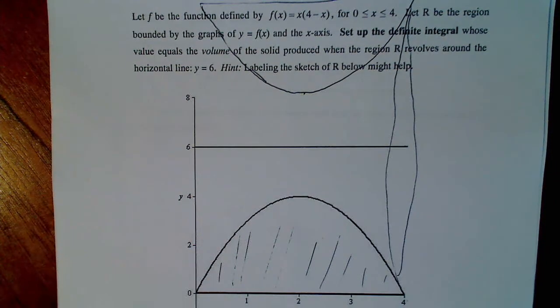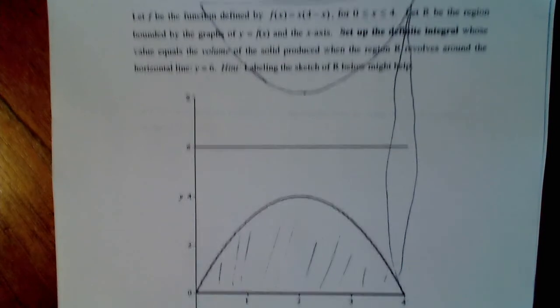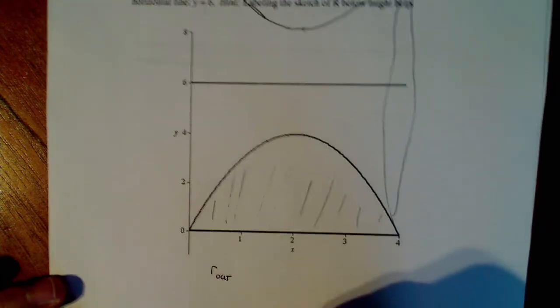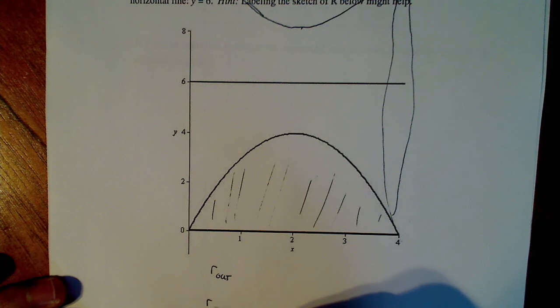But we're looking at it like this to actually calculate this integral. So let me try to use a different color pen here. I have a purple pen that might help. So what we actually have to do is calculate the radius of the outside part and the radius of the inside part.